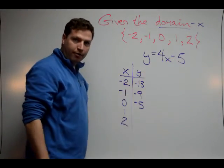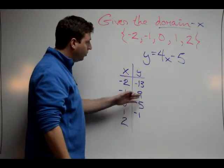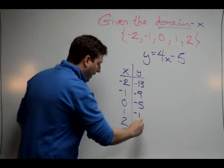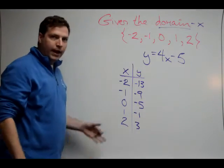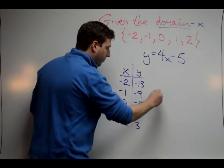Plug in a 1, I get 4 minus 5 with another negative number, a -1. 2 times 4 is 8, minus 5 is 3. So the range, given this domain, is the values here for y.